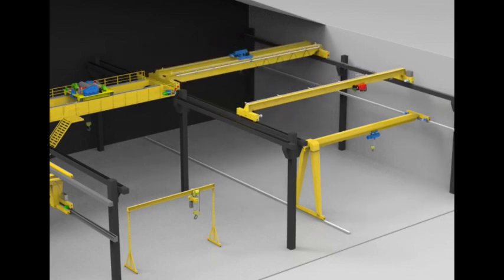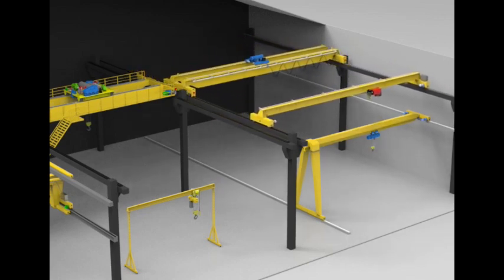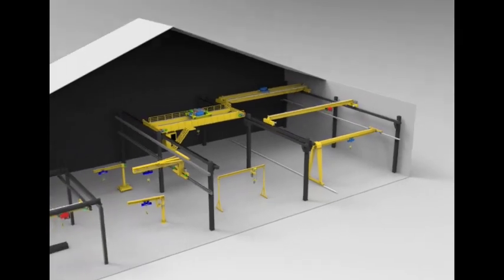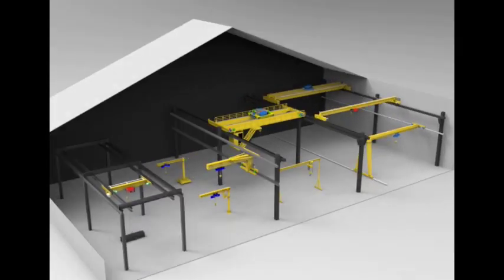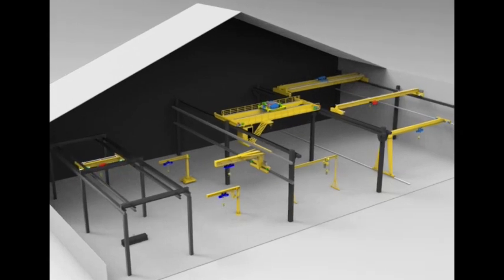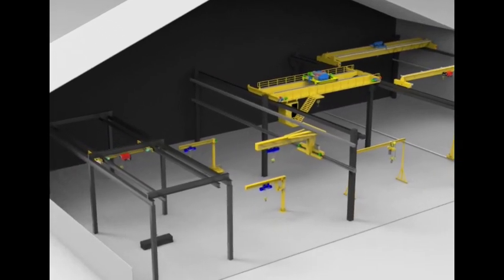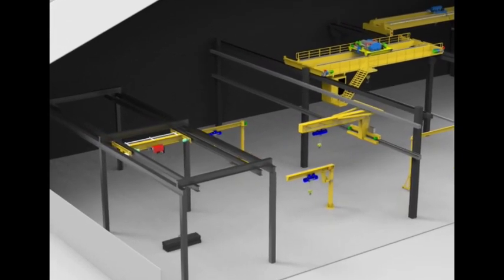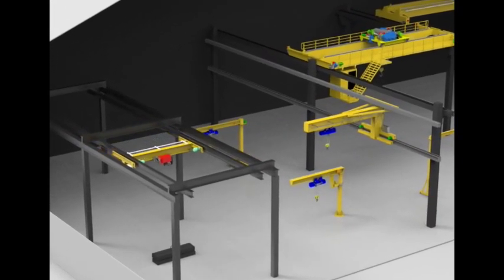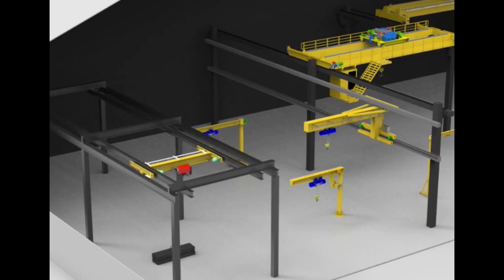Single girder overhead cranes, 1 ton to 20 ton. Single girder overhead cranes are a common sight in workshops. They consist of a horizontal bridge that spans the width of the workspace, with a single girder supporting the hoist and trolley. These cranes excel at lifting and moving loads within the workshop, making them ideal for tasks like transporting materials along assembly lines or moving heavy machine parts.